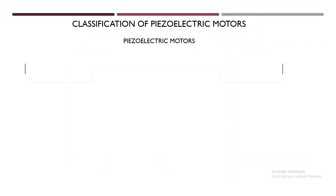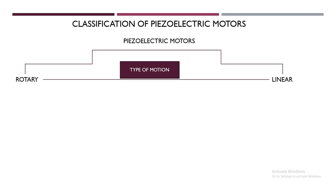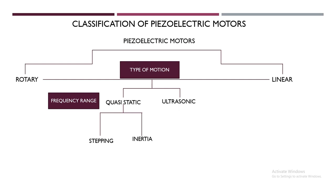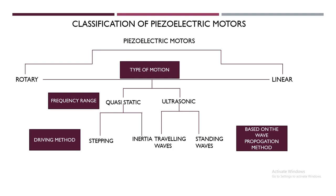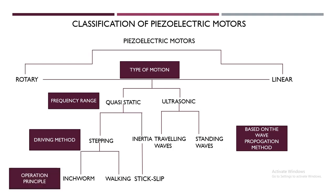Moving on, let's look at the classification of piezoelectric motors. First you have either rotary or linear piezoelectric motors based on the type of motion. Those are further divided into quasi-static piezoelectric motors and ultrasonic piezoelectric motors based on the frequency range. Quasi-static piezoelectric motors are further divided into stepping and inertia motors, and ultrasonic motors are divided into traveling waves or standing waves ultrasonic piezoelectric motors. Stepping and inertia motors are differentiated based on the wave propagation method. Stepping motors can be further classified into inchworm and walking motors, and inertia motors can be further classified into stick-slip motors based on the operation principle.